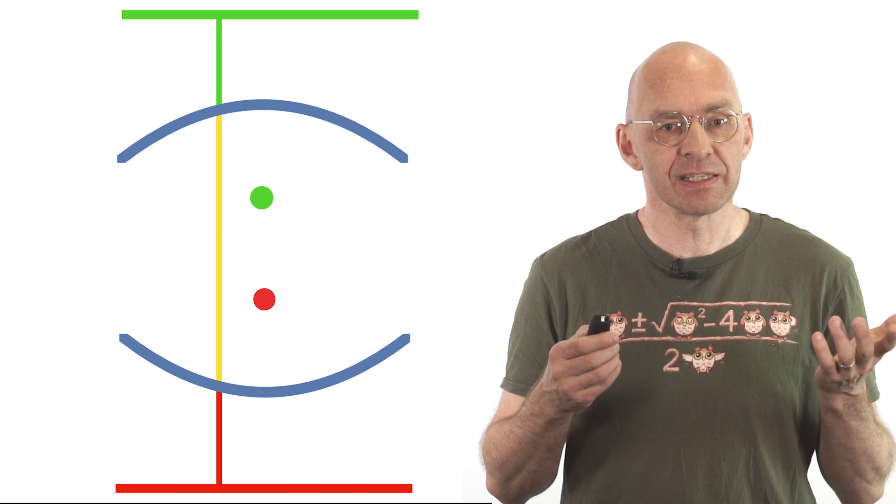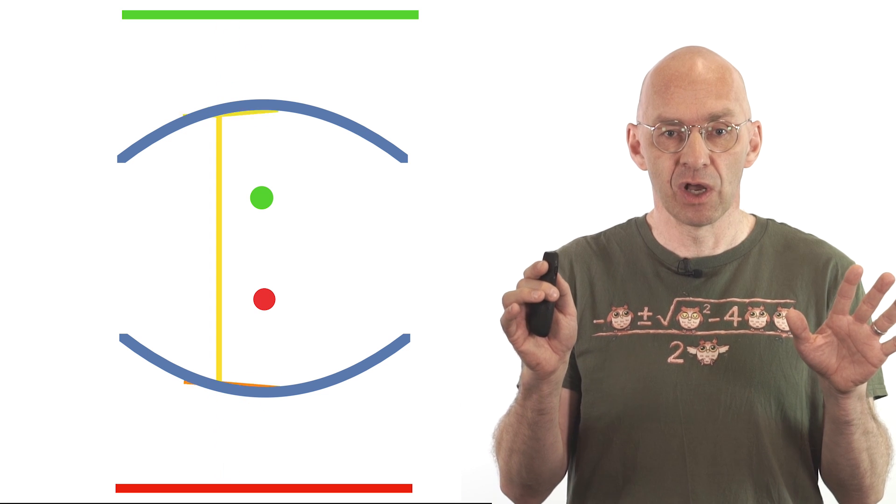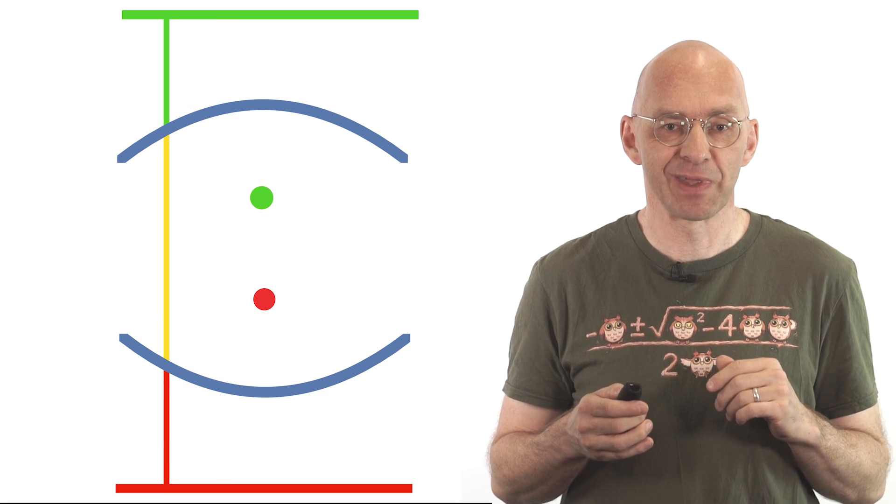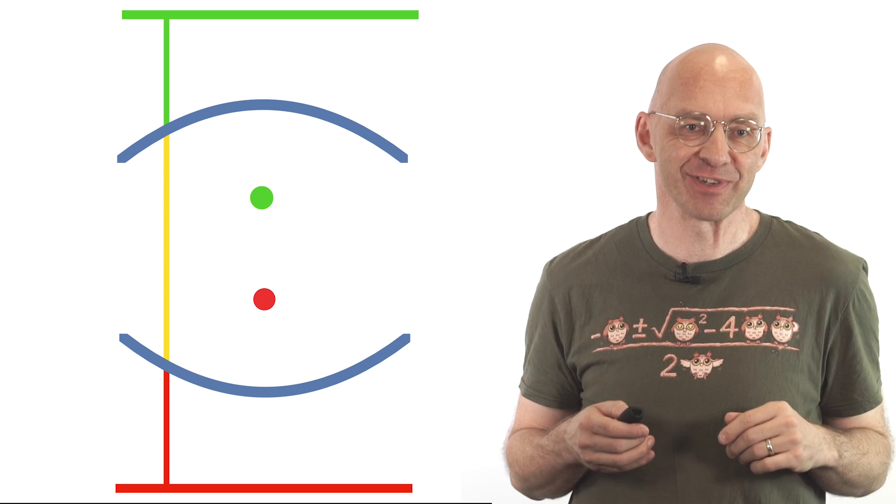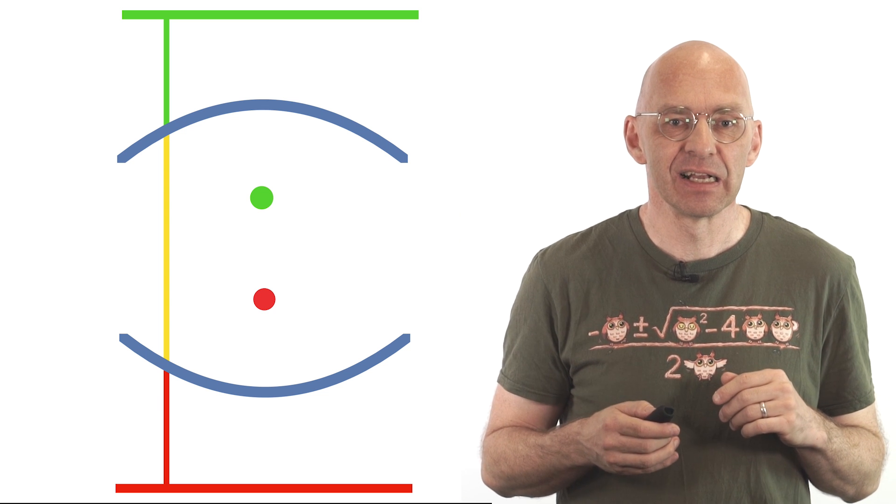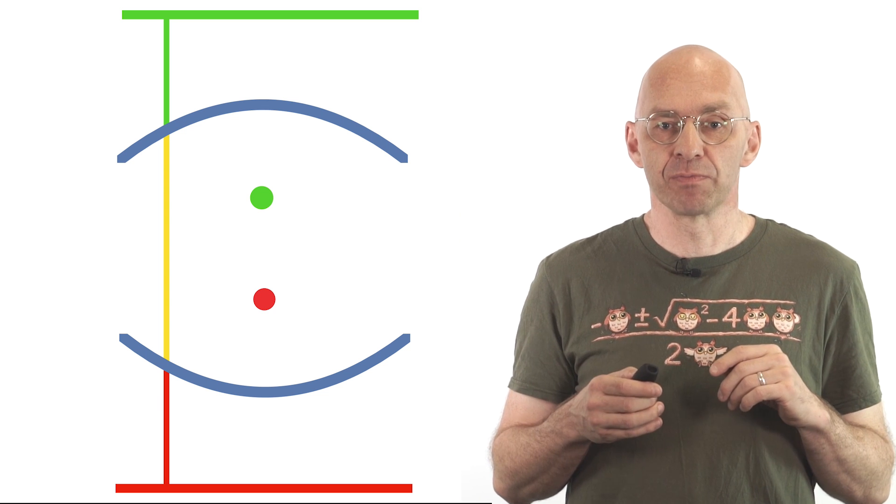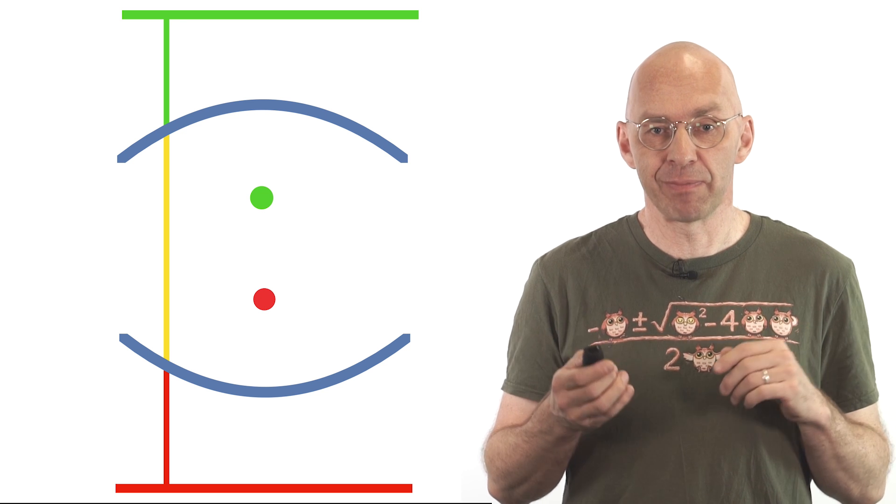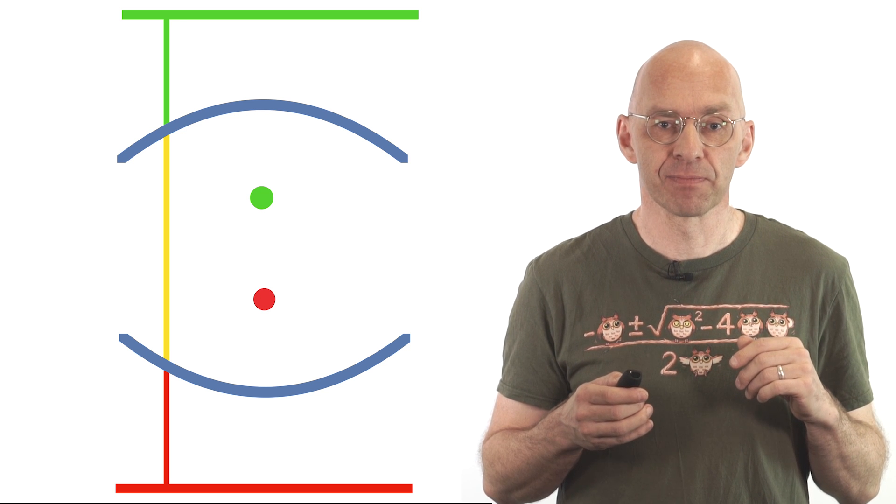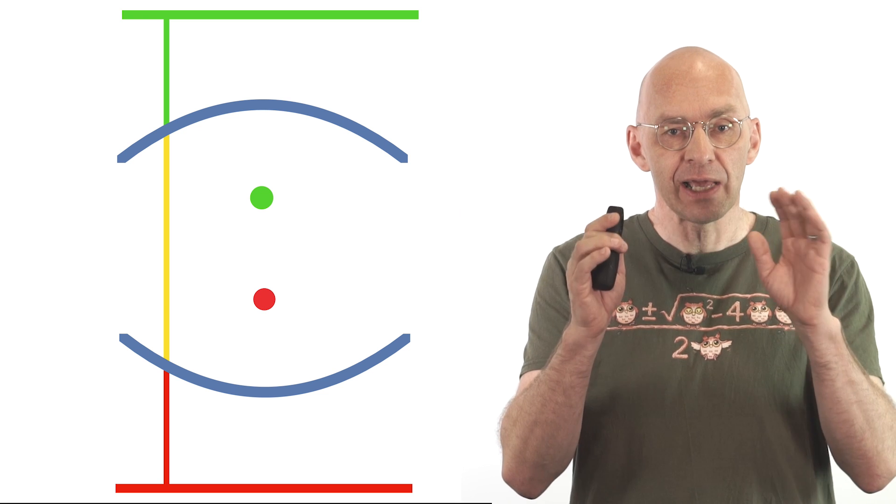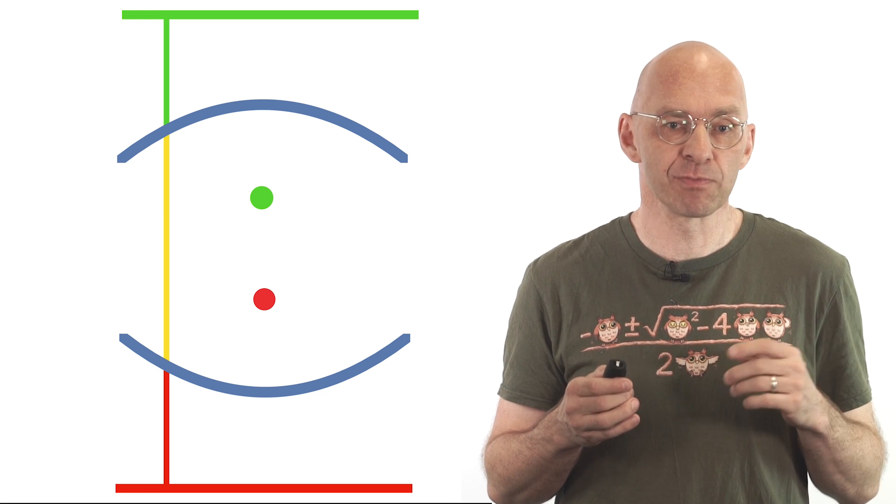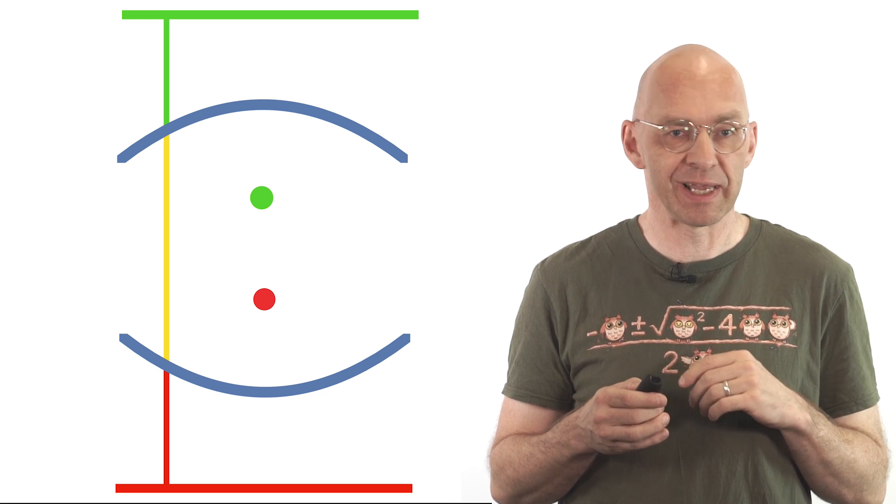And since this is the case for all paths, all paths have the same length. How easy and how pretty a proof is that? This equal length property is also important for many other really significant applications of parabolic reflectors. But strangely, unlike the focusing property, the equal length property is rarely mentioned by anybody.